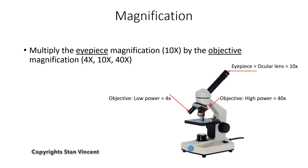Magnification means how large the object can be seen. There are two lenses we're going to look at. One is called the eyepiece or the ocular lens — it usually magnifies 10 times. The objective lens usually magnifies 4x, 10x, or 40x. The smallest lens magnifies 4x.